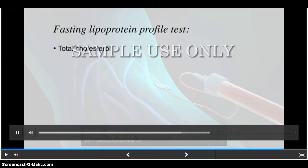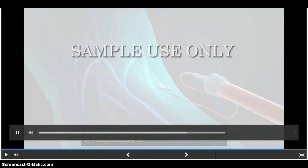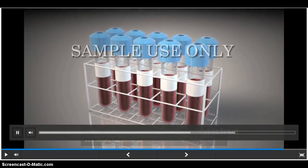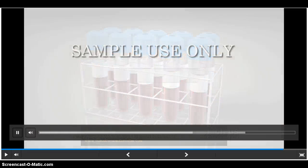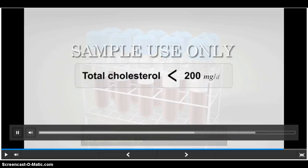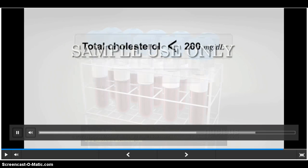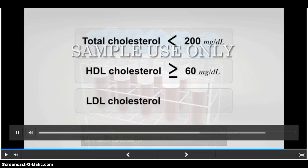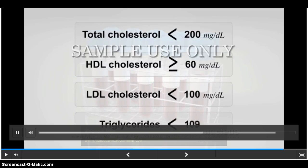A blood sample will be taken from your arm or finger after you have not eaten for 9 to 12 hours. The total cholesterol goal should be less than 200 milligrams per deciliter. For most people, an ideal HDL or good cholesterol should be 60 or higher. An ideal LDL or bad cholesterol should be less than 100, and fasting triglycerides should be less than 150. Your specific goals may vary depending on your health situation. Ask your doctor what your lipid goals should be.